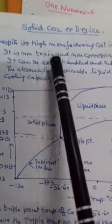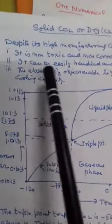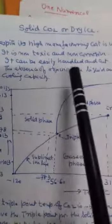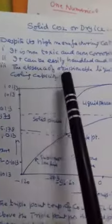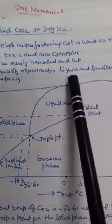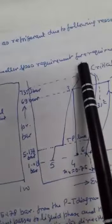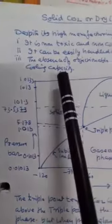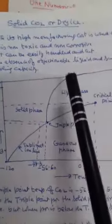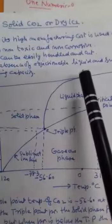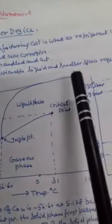It can be easily handled and cut. The absence of objectionable liquid and smaller space requirement for required cooling capacity. In small parts, manufacturing is possible, it is less expensive to manufacture, and it is more effective.